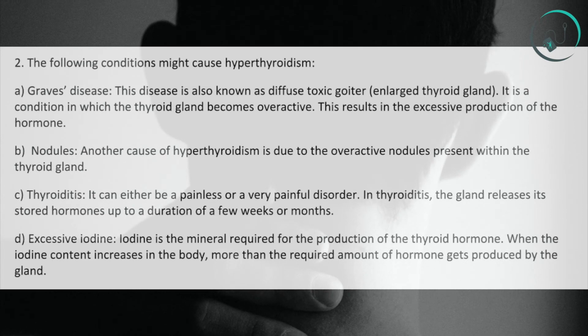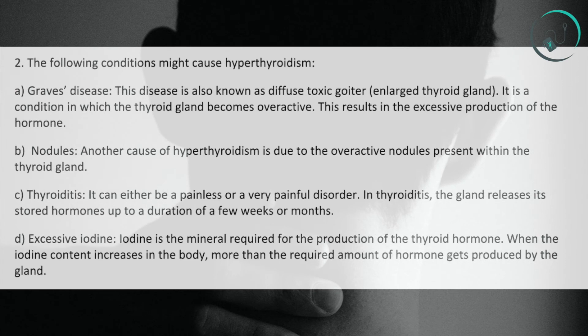D. Excessive Iodine: Iodine is the mineral required for the production of thyroid hormones. When the iodine content increases in the body, more than the required amount of hormone gets produced by the gland.